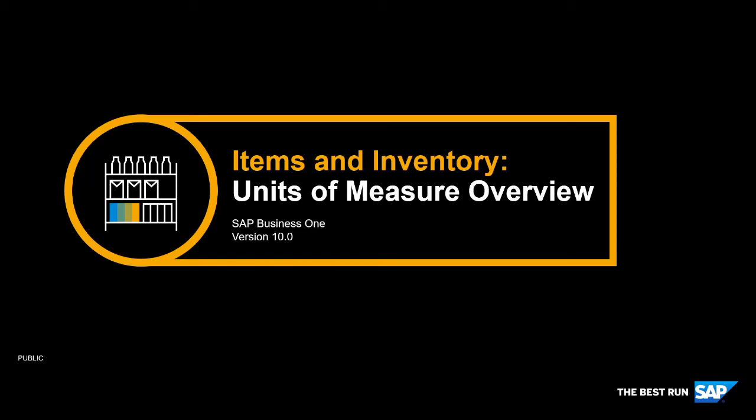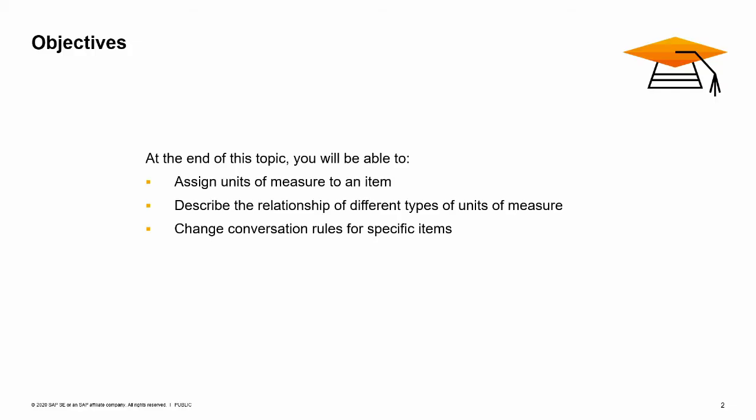Welcome to an overview of units of measure in SAP Business One. In this topic, you will learn how to assign units of measure to items by using unit of measure groups and describe the relationship of different types of units of measure for items in sales, purchasing, and inventory. Additionally, you are able to change the conversion rates for specific items.